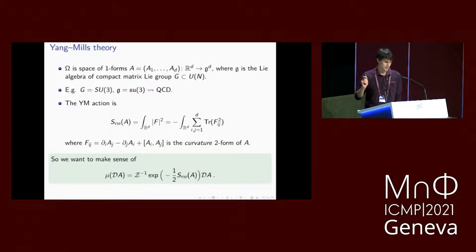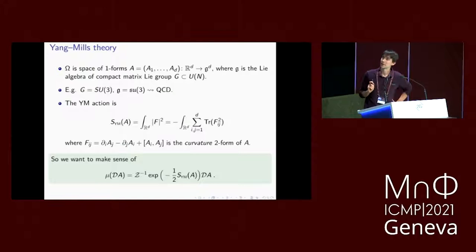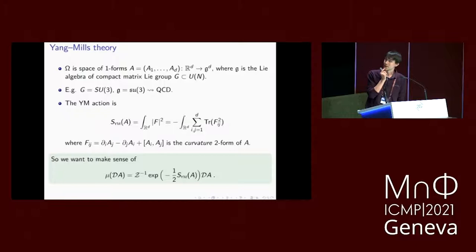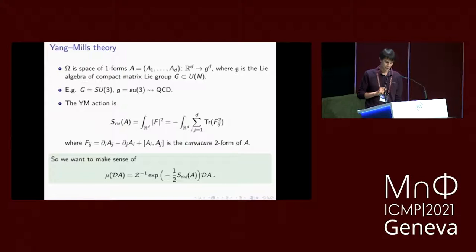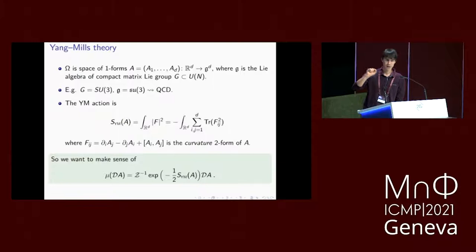The state space is a space of fields that take values in a vector space — g to the d, with D components, each a function from R^d into the Lie algebra. The second ingredient is the Yang-Mills action, which is essentially the L2 norm of the curvature of the one-form. In terms of matrices, it's the trace of the square of F, the so-called curvature, given by an expression that is anti-symmetric in i and j and non-linear in A, containing a quadratic term. That makes Yang-Mills theories with non-abelian gauge groups reasonably challenging to study.